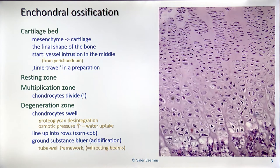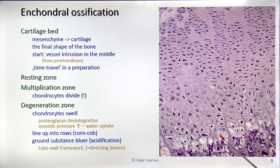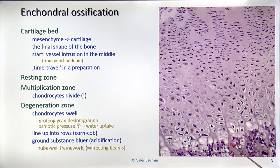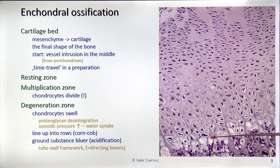These cells, in consequence of this swelling, do not fit in space, making an elongated cylindric structure that looks like a corn cob. Another change is that the interstitial substance becomes bluer — bluer color means more acidic proteoglycans accumulate here. More acidic proteoglycans means the matrix is harder, and this is the final goal of the process. The cells sacrifice themselves and die out. What remains is a practically cylindric wall of the original interstitial substance of the cartilage, making a solid framework for the following processes. Traditionally, textbook writers name these directing beams — we know they are walls of a cylinder and this is just a cross section of those walls.